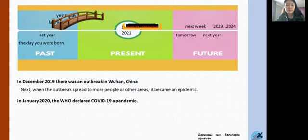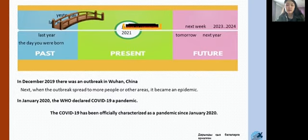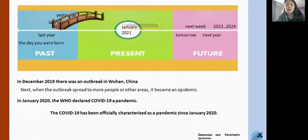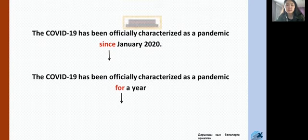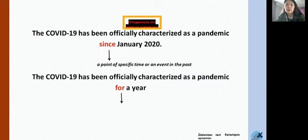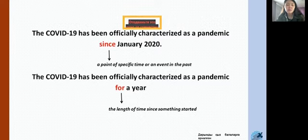We may say: 'COVID-19 has been officially declared as a pandemic since January 2020.' Or we may say: 'COVID-19 has been officially characterized as a pandemic for a year.' As you can notice, we use present perfect in both sentences, but there is a small difference. We use 'since' to refer to a specific point in time in the past, and we use 'for' to describe the length of time since something has started.